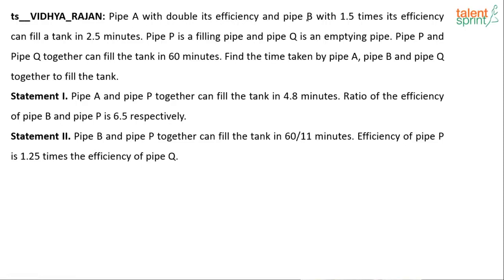Pipe A with double its efficiency and pipe B with 1.5 times its efficiency can fill a tank in 2.5 minutes. Pipe P is a filling pipe and pipe Q is an emptying pipe. Pipe P and pipe Q together can fill the tank in 60 minutes. Find the time taken by pipe A, pipe B, and pipe Q together to fill the tank. Statement 1 says pipe A and pipe P together can fill the tank in 4.8 minutes, with the ratio of efficiency given. Statement 2 says pipe B and pipe P together can fill the tank in 60/11 minutes, and the efficiency of pipe P is 1.25 times the efficiency of pipe Q.